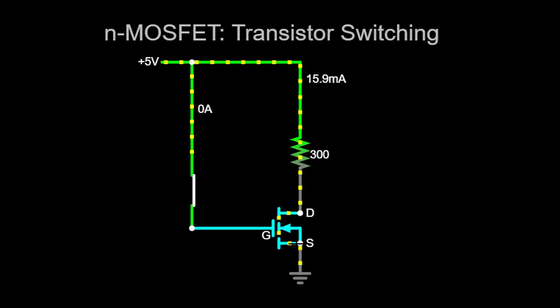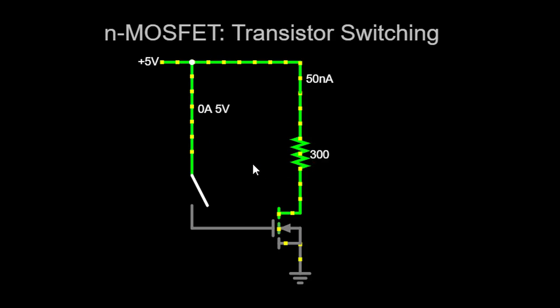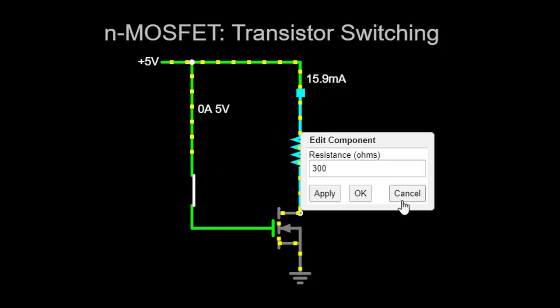However, if we open the switch, the voltage at the gate drops to 0V. This change turns off the N-MOSFET, causing it to enter a high-resistance state between the drain and source terminals. Consequently, the flow of current through the circuit is effectively blocked.